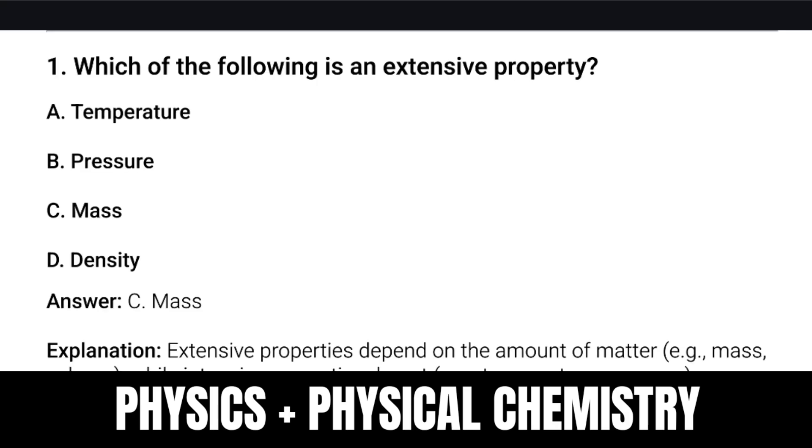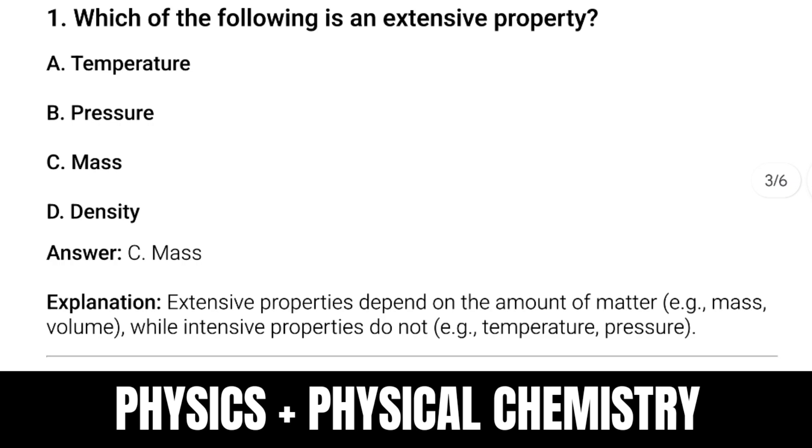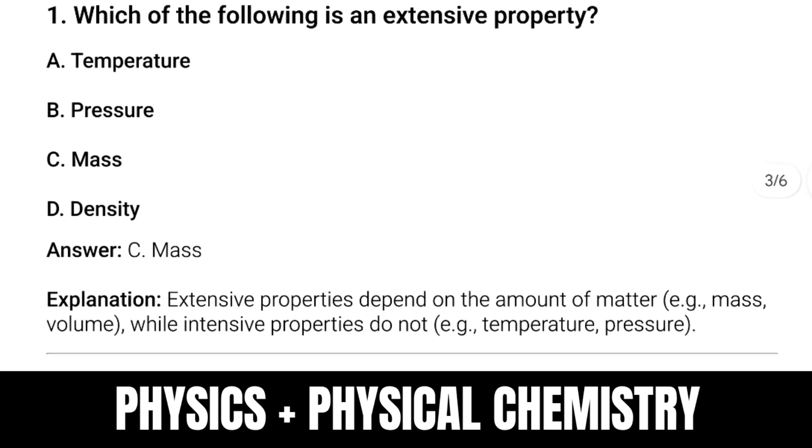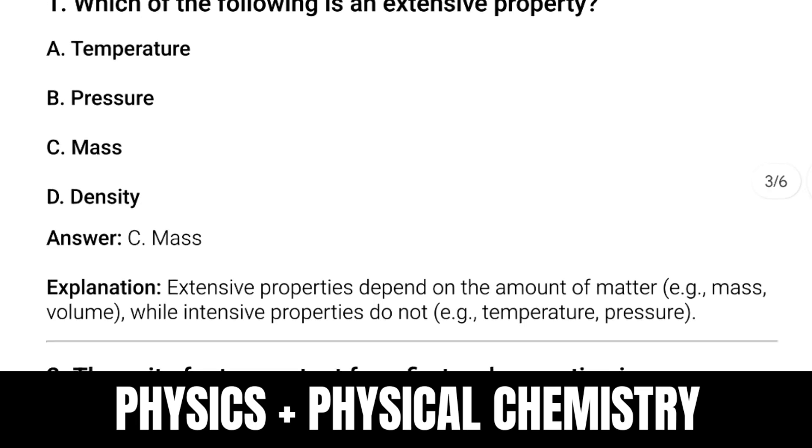Physical chemistry important question: Which of the following is an extensive property? Answer is mass. Extensive properties depend on the amount of matter, like mass and volume, while intensive properties do not depend on mass or volume; they depend on temperature or pressure.